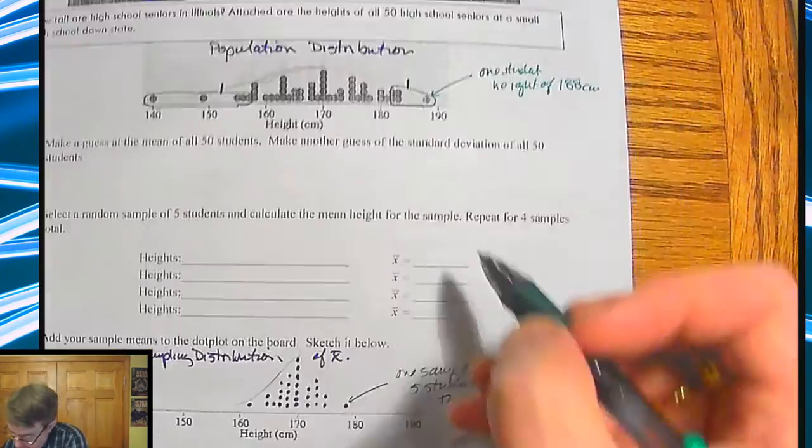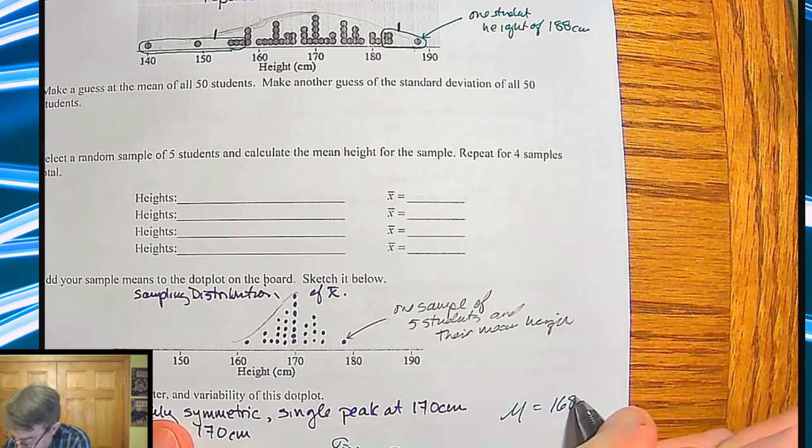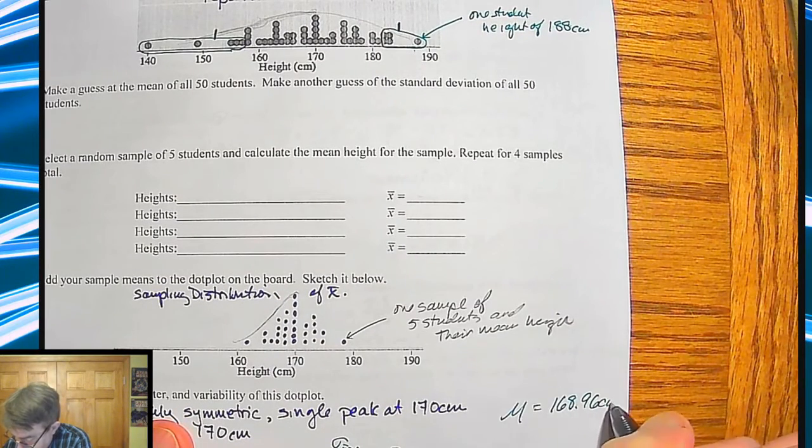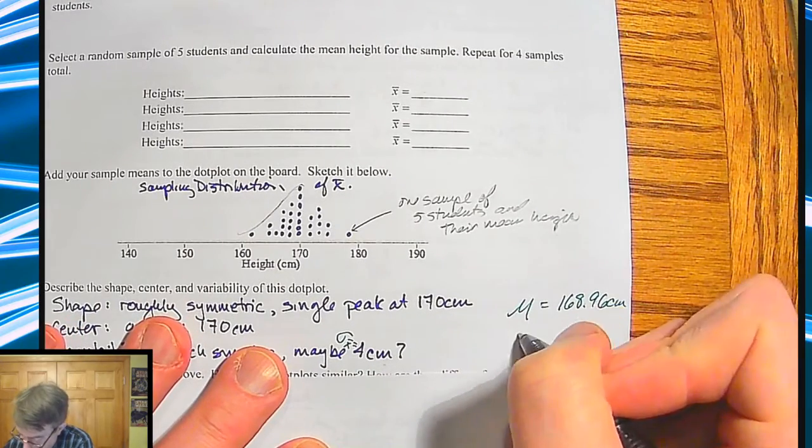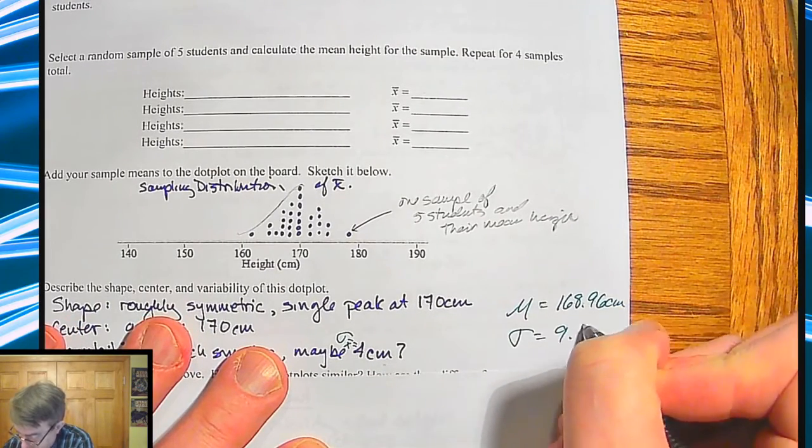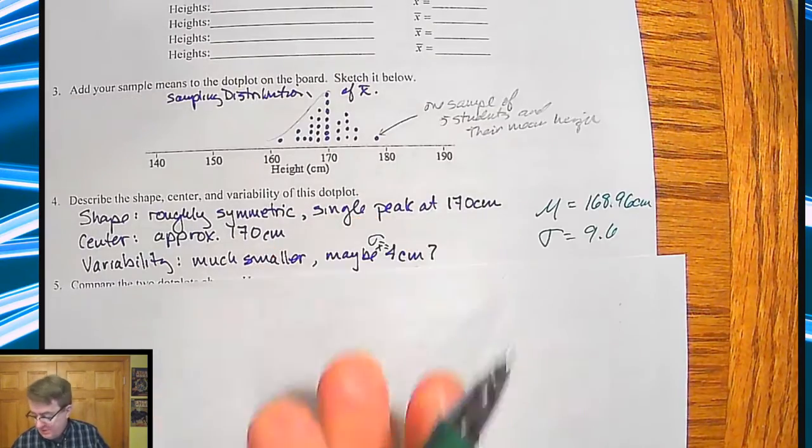Oh, and by the way, the actual mean up here is 168.96 centimeters. So that 170 was really, really close. And the standard deviation is 9.6. So that idea, I mean, just so that idea that you can kind of get a sense of it from the dot plot isn't that far off.